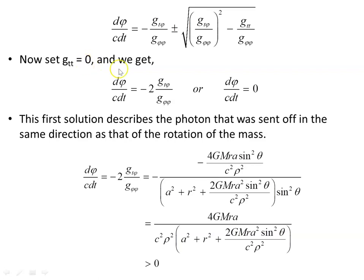Setting g_tt — the time component — to zero simplifies the expression. We get dφ/c dt equals ±√(this object). In the case of minus, we get two copies and in the case of plus they cancel to zero. So the first solution describes the photon sent off in the same direction as the rotating mass: dφ/c dt = −2g_tφ / g_φφ, where g_tφ and g_φφ are the respective metric components. There are two cross-terms t-φ and φ-t in the metric, giving a factor of two.